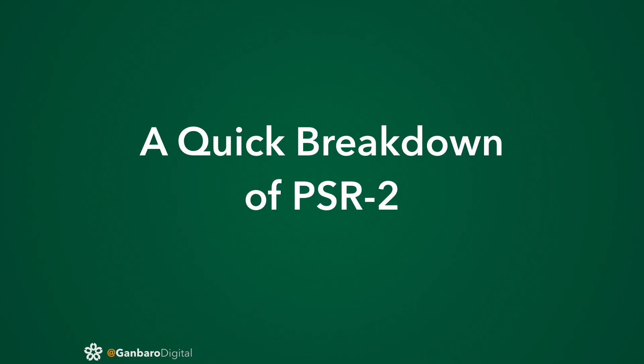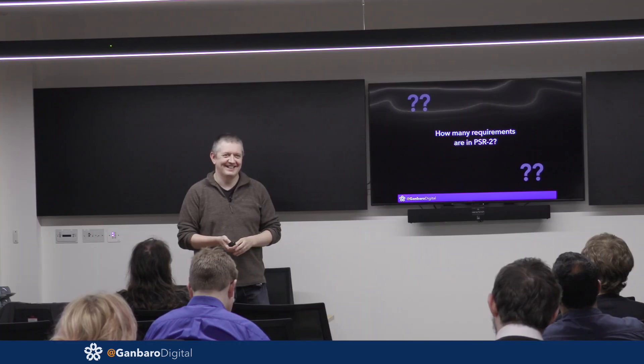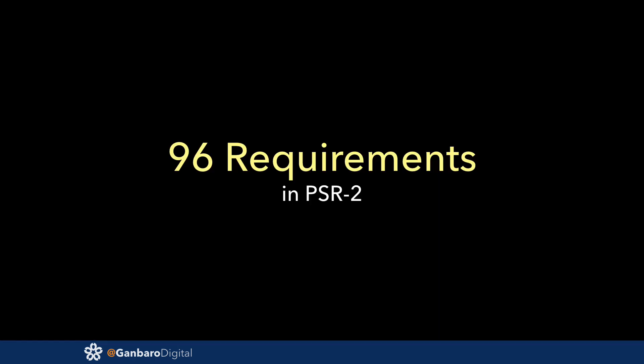I want to give you a quick breakdown and analysis of PSR2. For those of you using PSR2, have you got a rough guess as to how big it is — how many requirements it puts on you? A hundred? That's not a bad guess. Do you want to go higher or lower than a hundred? Lower? What references PSR1? I wouldn't include PSR1 in it by my methodology — there are 96, it could actually be 99.